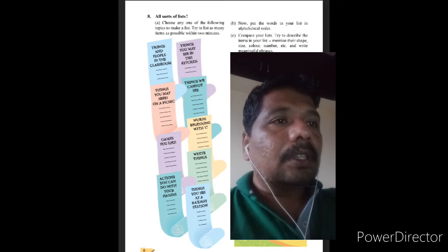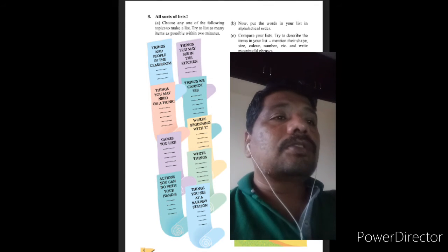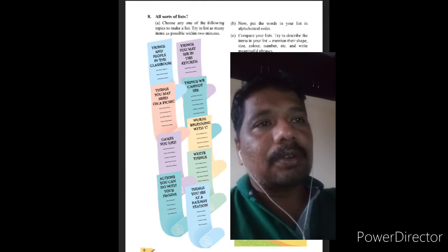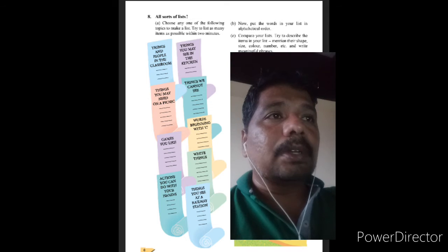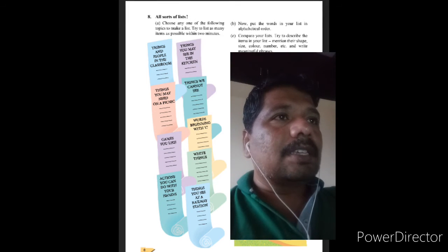Last point is things you see at a railway station. Which things do you see at the railway station? You can see rail, platform. All these things you have to write. You have to take two minutes for each of the topic and think over it and write down.